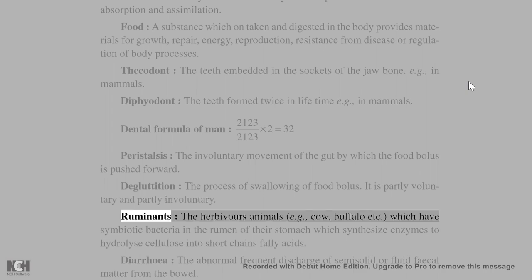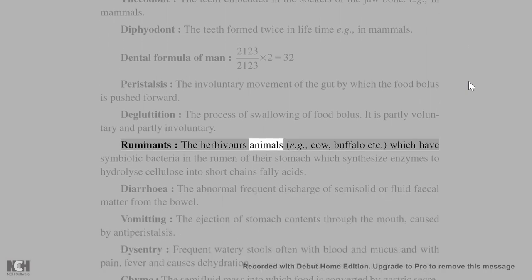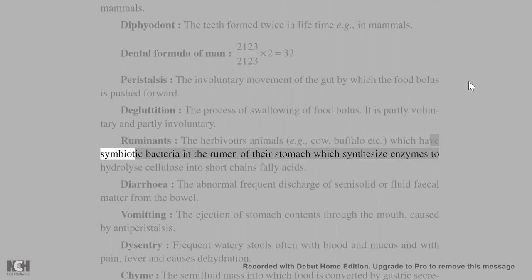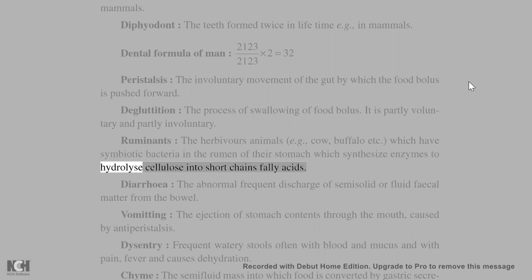Ruminants: herbivore animals such as cow, buffalo, etc., which have symbiotic bacteria in the rumen of their stomach. These bacteria synthesize enzymes to hydrolyze cellulose into short-chain fatty acids.